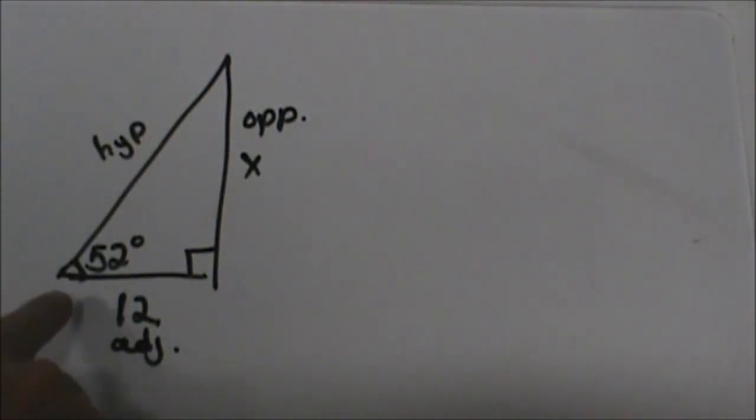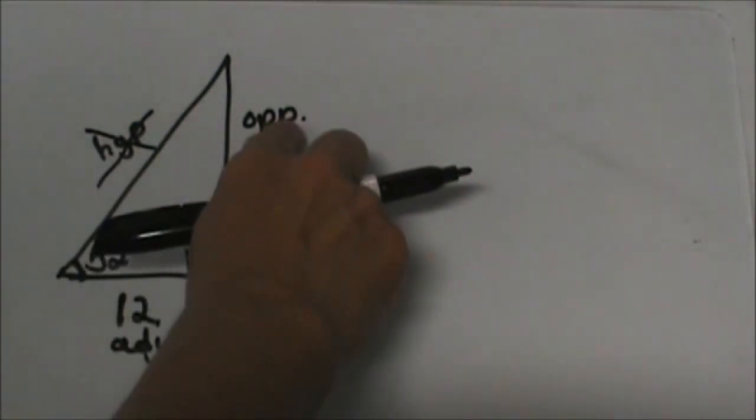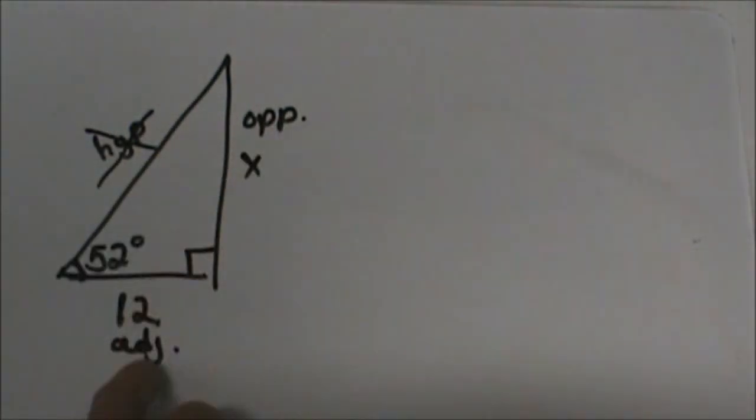Which two sides are we using? There is no marking, there is no length, and our x is not on the hypotenuse, so we are not going to use hypotenuse. We are going to use the opposite side and the adjacent side.